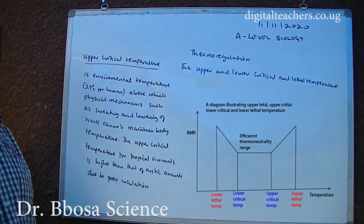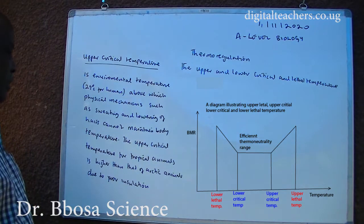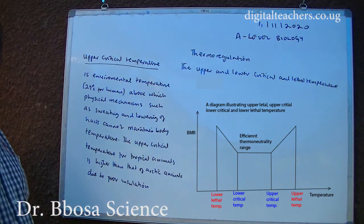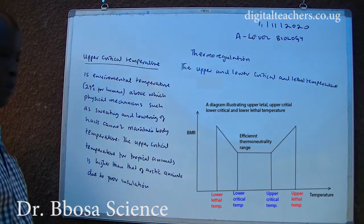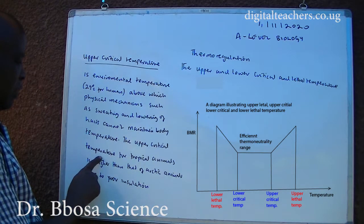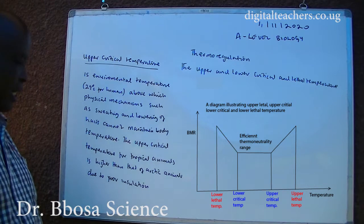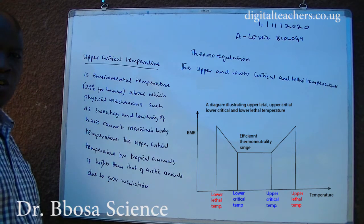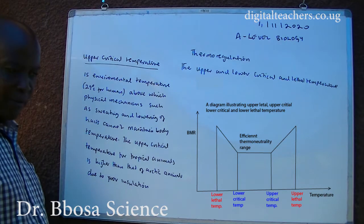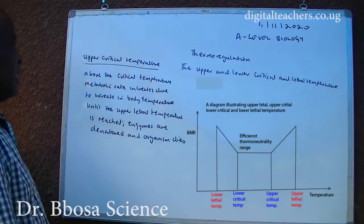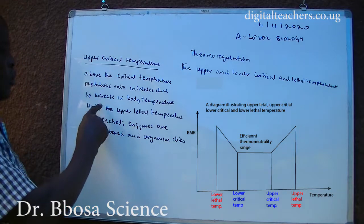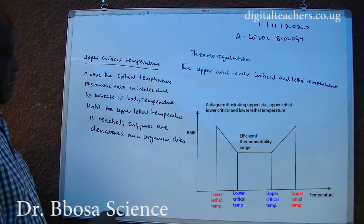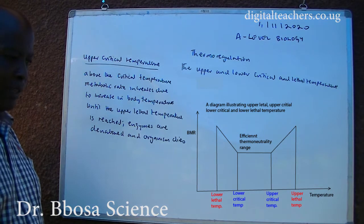The upper critical temperature is the temperature above which physical means such as sweating and lowering of hairs cannot maintain body temperature. The upper critical temperature is higher for tropical animals than for Arctic animals due to poor insulation. The metabolic rate increases due to increase in body temperature until the upper critical temperature is reached, at which point enzymes are denatured and the organism dies.